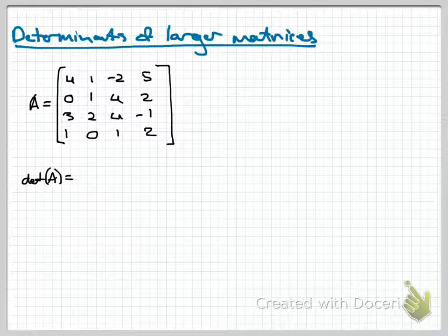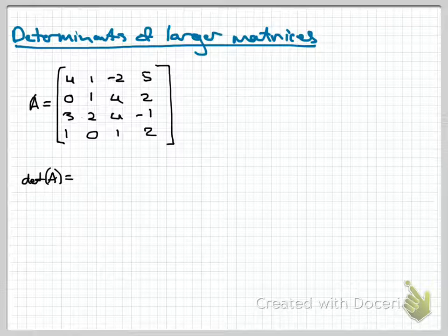So here I have A. This is a 4 by 4 matrix. Right now we do not know what the determinant of a 4 by 4 even means or how to calculate it, and we're going to make this up as we go. The way that we did a 3 by 3 determinant was to go along the top row. Every time I select one entry at a time along the top row, I delete the row and column that it sits in, and then take the determinant of the leftover matrix.